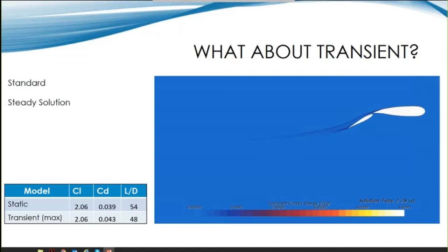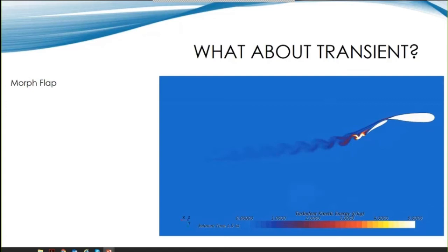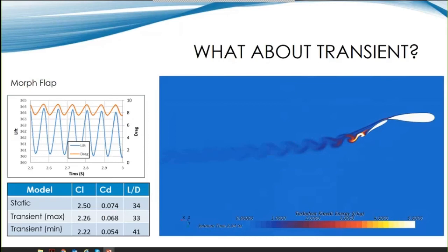For the morphing flap design, we are seeing vortex shedding occurring, which leads to an oscillating response. The variation in lift is much larger than the drag variation, but the transient results indicate a lower max lift coefficient but also a significantly lower drag coefficient.